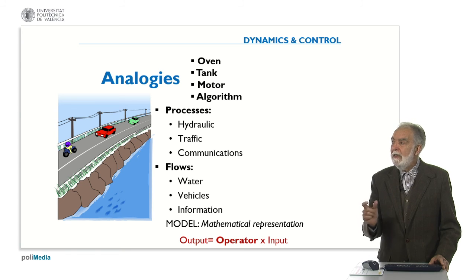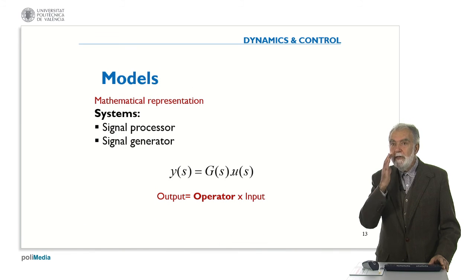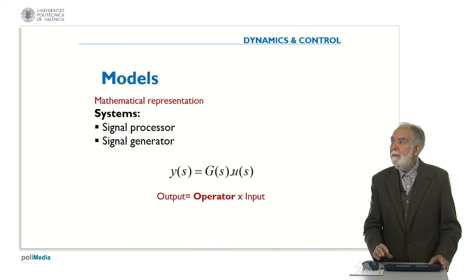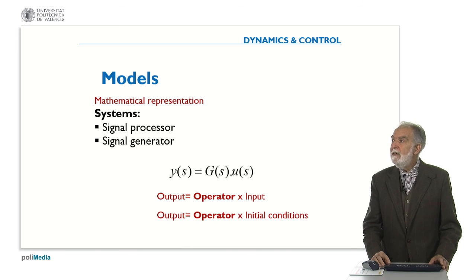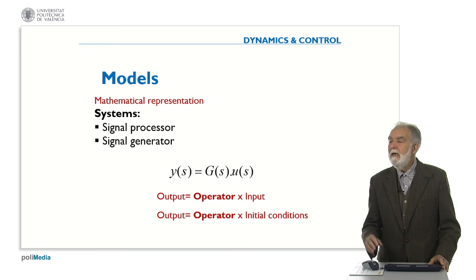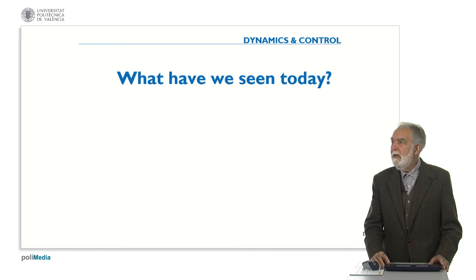So, in general, we will have that the output is equal to the input times an operator. The mathematical representation of a system will be: if it's a signal processor, there is an input u and an output y, and the output is equal to the input times the operator. Or, if it's a signal generator, the output is the operator times the initial conditions. In any case, the operator will be the simplest representation — the simplest model of a system.